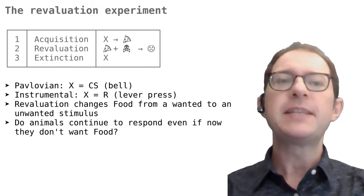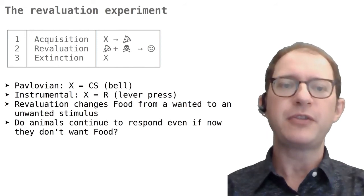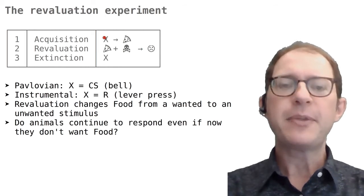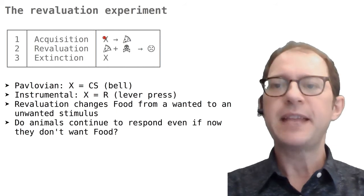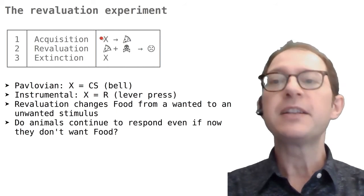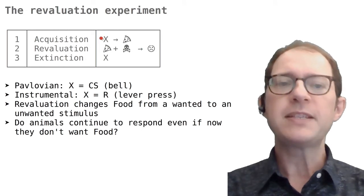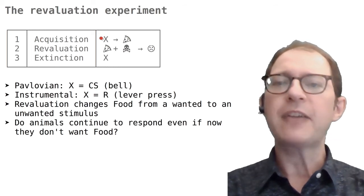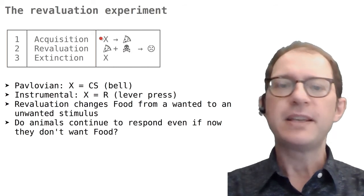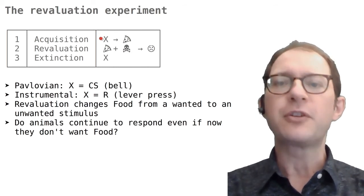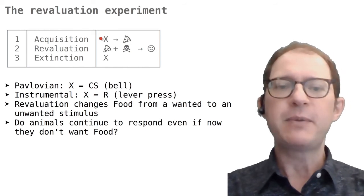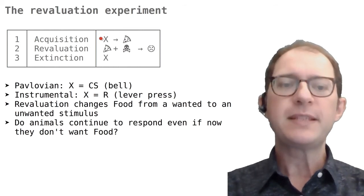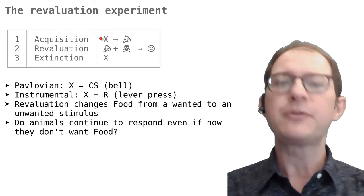The basic design is pretty much the same for Pavlovian and instrumental conditioning. In a first phase, called the acquisition phase, we show the animal that something leads to food. This something is indicated with X in the table because it can be different: in Pavlovian conditioning it is a stimulus like the CS, while in instrumental conditioning it is an action like pressing a lever. In the second phase, we establish a dislike for the food, typically done with a drug that gives the animal a bellyache — this is called taste aversion learning.